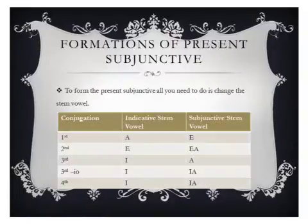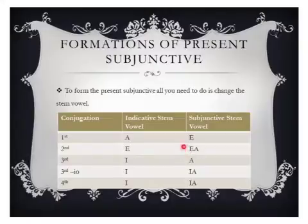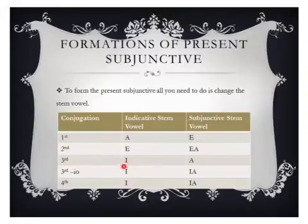Again, when we form the present subjunctive, all you need to do is change the stem vowel. Notice how the stem vowel in the first conjugation is normally 'a,' like 'amas.' For the third, something like 'ponit' will become 'ponat.' For the third io, something in the indicative like 'capitis' will become 'capiatis.' And for the fourth, something like 'adimus' will become 'adiamus.'